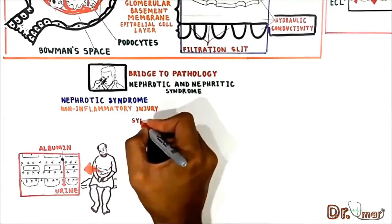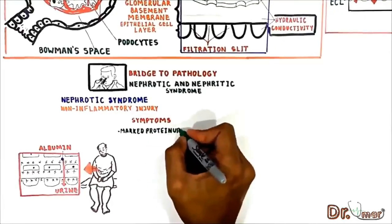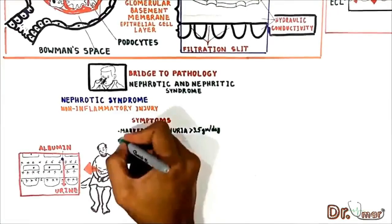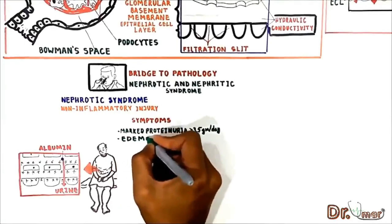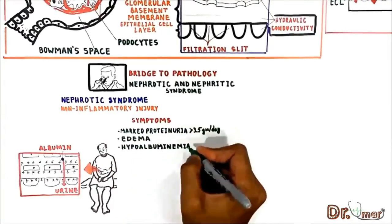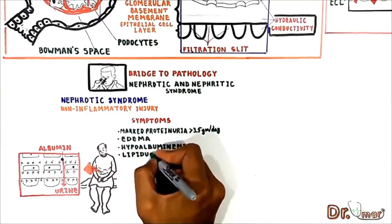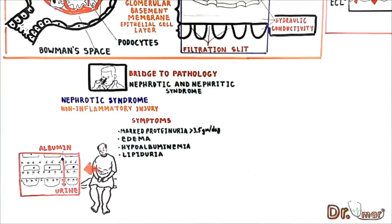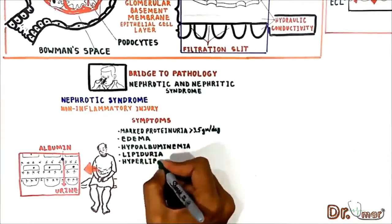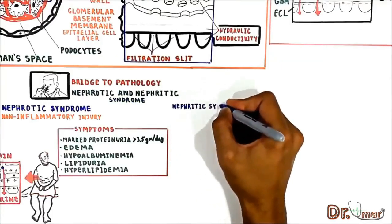The most common clinical signs of nephrotic syndrome are marked proteinuria (more than 3.5 grams per day), edema due to loss of plasma oncotic pressure, hypoalbuminemia due to albumin loss in urine, lipiduria due to disrupted membrane system and proteins in urine, and hyperlipidemia due to increased lipid synthesis in the liver.